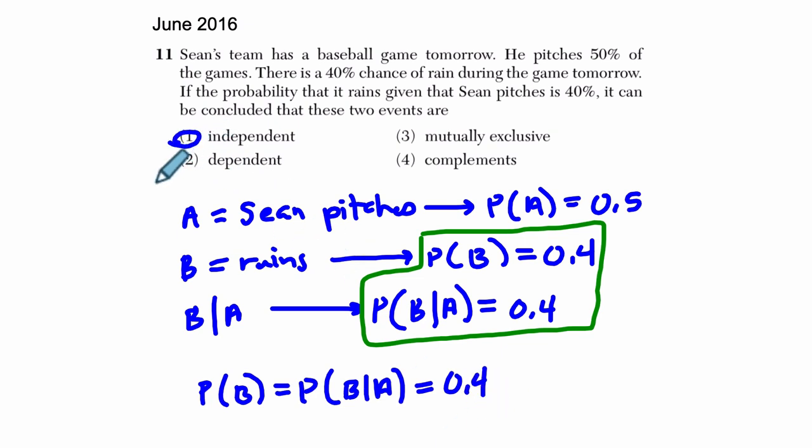Alright, so this is our answer. Now if you just give me a moment, let me explain some of the intuition around this idea. Basically, what's happening is the probability of B happening, of it raining, is the same given that Sean has pitched.